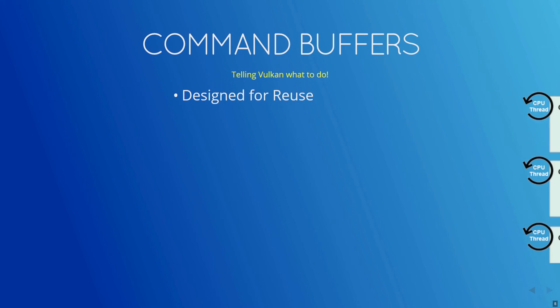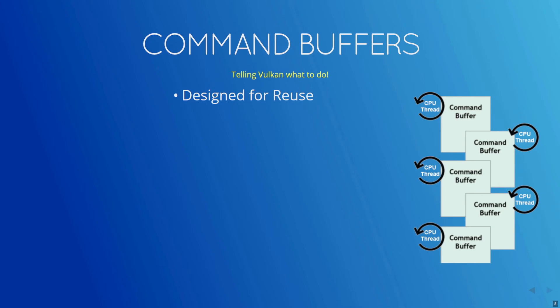In OpenGL, you issue a list of GL commands to do your rendering. There's no easy way to store these commands for reuse. With Vulkan, you use command buffers. You record the commands into a command buffer and subsequently submit it to a device queue for execution on the GPU.